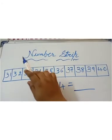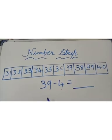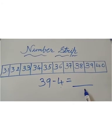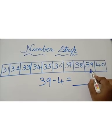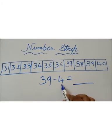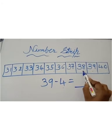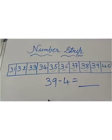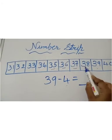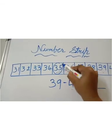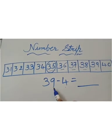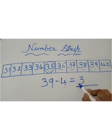Now let's learn subtraction on the number step. Our sum is 39 minus 4. Put your pen at 39 on the number step, and then go back by 4 places: 1, 2, 3, 4. You will be at 35. So your answer is 39 minus 4 is equal to 35.